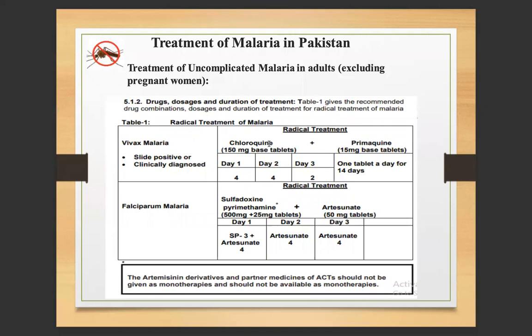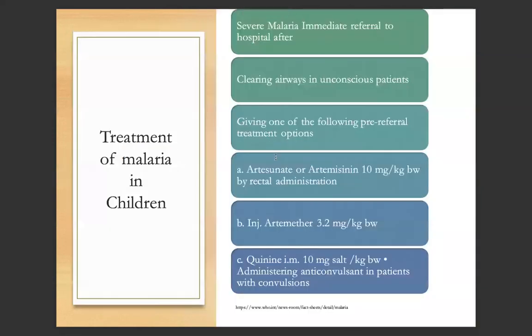Treatment of malaria in Pakistan: For vivax malaria, radical treatment includes chloroquine 150mg base tablets and primaquine 150mg base tablets — one tablet a day for 14 days. For falciparum malaria, treatment includes sulfadoxine-pyrimethamine and artesunate — 500mg plus 25mg tablets of sulfadoxine-pyrimethamine and artesunate 50mg tablets given on days one, two, and three. For severe malaria in children, immediate referral to hospital is recommended. Pre-referral treatment options include artesunate or artemisin 10mg/kg body weight by rectal administration, injection arteether 3.2mg/kg body weight, quinine intramuscular 10mg salt per kilogram body weight, and administering anticonvulsants in patients with convulsions.